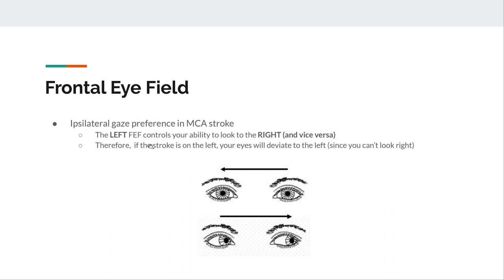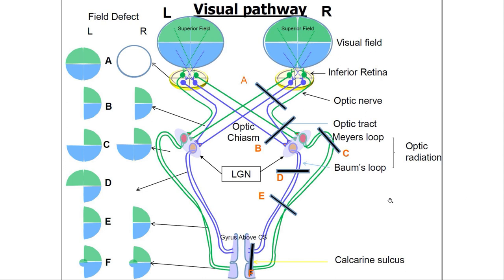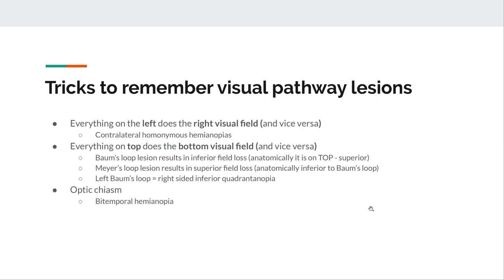The left frontal eye field controls conjugate gaze to the right. A stroke on the left means you can no longer look to the right, so your eyes deviate to the left — ipsilateral deviation to the lesion. This is a slide from DISA from Anatomy. Tips for understanding lesions in the visual pathway: a lesion at the optic chiasm leads to bitemporal hemianopia — that one comes up again in P4P with pituitary tumours pressing on the chiasm.